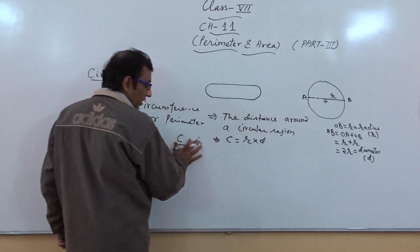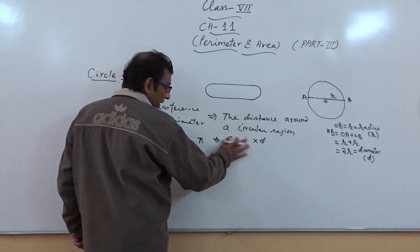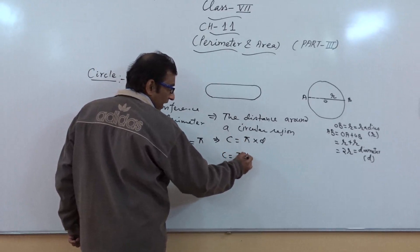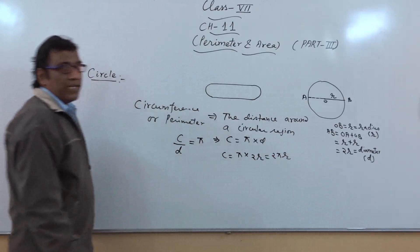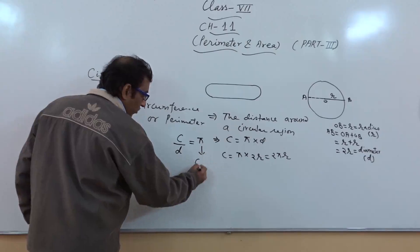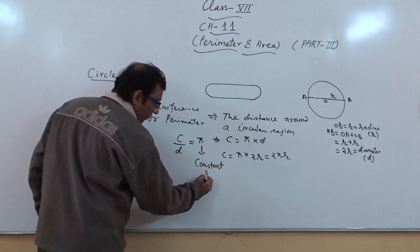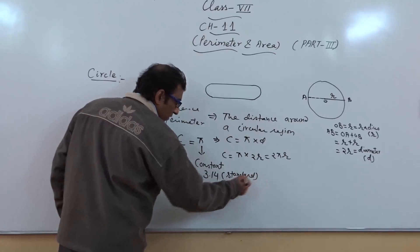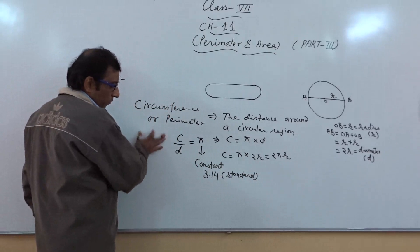C upon D basically equals pi — not r, this is pi. Pi is constant, and the value of pi is 3.14; it is the standard approximate value. So the ratio of C upon D equals pi, meaning circumferences divided by diameter equals pi.